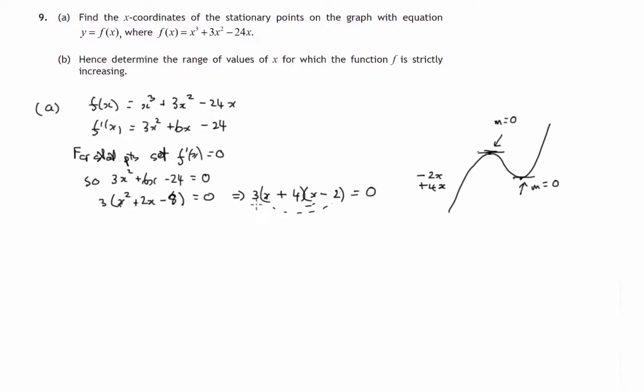So here we have 3 times something times something is zero. So one or other of these two factors must be zero. So x + 4 = 0 or x - 2 = 0. And that would mean x is -4 or x equals 2. So we've achieved -4 and 2 for the two values of x. We've certainly found the x-coordinates of the stationary points on this graph.